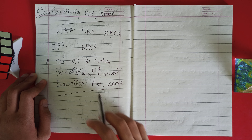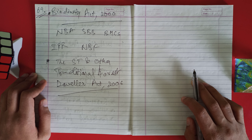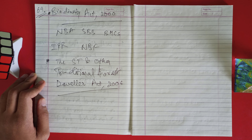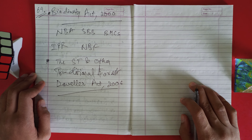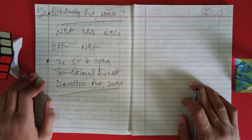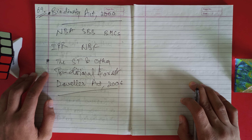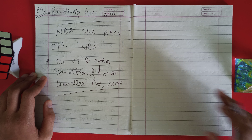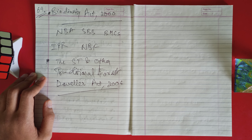The Forest Rights Act (FRA) is a tool to empower and strengthen local government and local self-governance, to address the livelihood security of the people, and to address the issues of conservation and management of natural resources and conservation governance of India. For the first time, the Forest Rights Act recognized and secured community rights in addition to individual rights: the right to protect, regenerate, conserve, or manage any community forest resource; the right to intellectual property and traditional knowledge related to biodiversity and cultural diversity; the right of displaced communities; and the right over developmental activity.